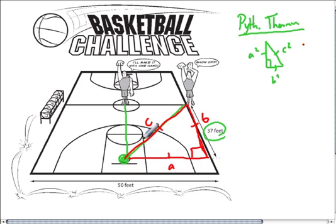We have our original distance of 37 feet here. We're also told that the court is 50 feet wide with the hoop in the center, so that means that A is going to be half of 50 feet, so A would be 25 feet.